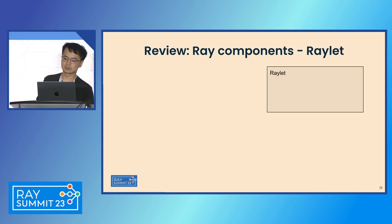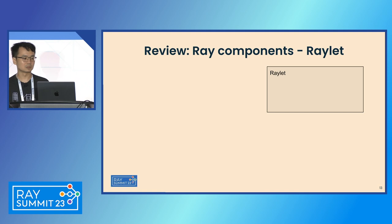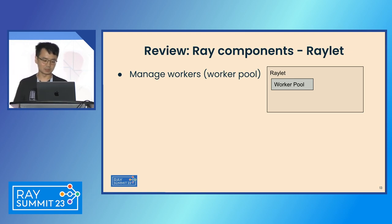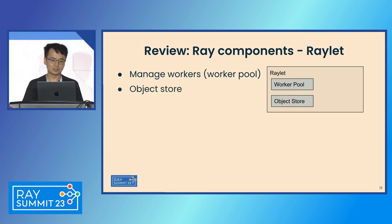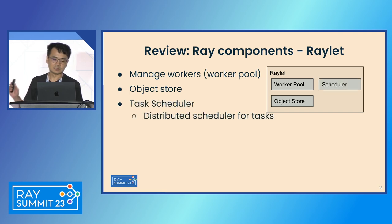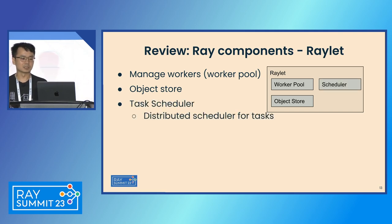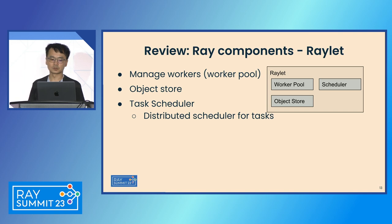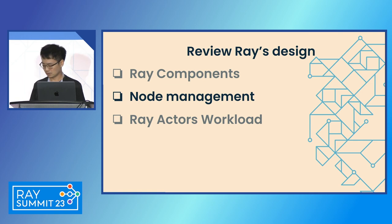Next, Raylet. Raylet runs on each of the worker nodes. It manages the Ray workers — covering worker preparation and monitoring their lifecycle. It also has an object store that stores data. Then it has a task scheduler inside it. The task scheduler is a distributed scheduler for tasks. It uses the resource view to see which Raylet should schedule a given task or actor.